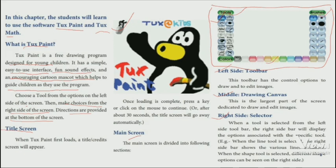When a tool is selected from the left bar, the right bar will display the options associated with that specific tool. For example, when the line tool is selected, the right bar will show the various line styles available. When a shape is selected, different shape options can be seen in the right bar.